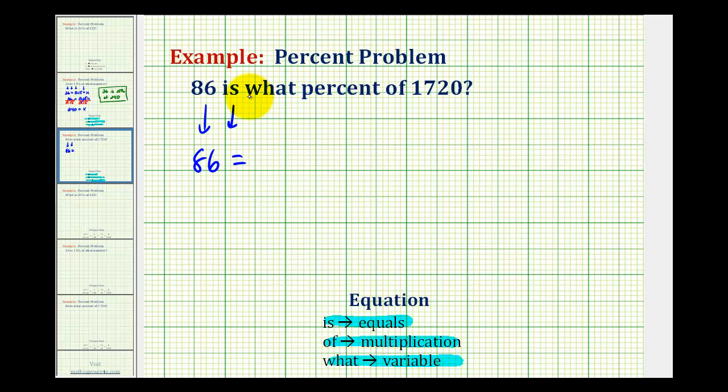Then we have what or what percent, which will be our variable. But to remind ourselves the answer will be a percentage, I'm going to use the variable p. Of means multiplication, and then we have 1,720.